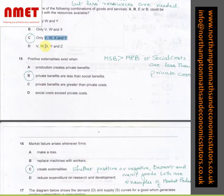In question number 15, positive externalities exist when private benefits are less than social benefits. So by definition, we know MSB is greater than MPB, or social costs are less than private costs.